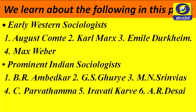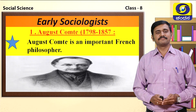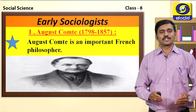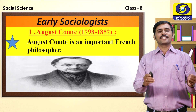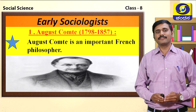Most important sociologist here is Auguste Comte, who lived between 1798 to 1857. Let us study about early sociologists. Among the early sociologists, Auguste Comte is one of the prominent ones, and he is called the father of sociology. We have already studied about him in the previous class, but now let us explore some more information about Auguste Comte.